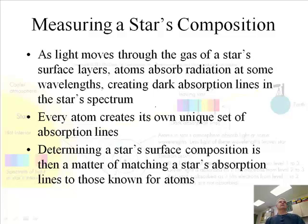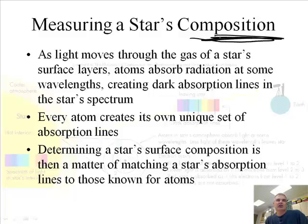Alright. As light moves through the gas of a star's surface layers, atoms absorb radiation at some wavelengths, creating dark absorption lines in the star's spectrum. So this is what we're talking about its composition. How do I know what's in a star? Okay. Every atom creates its own unique set of absorption lines.